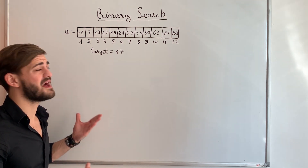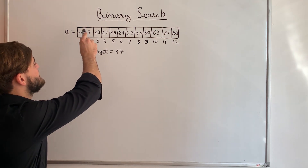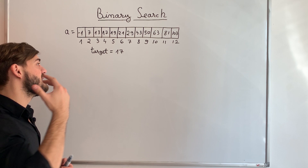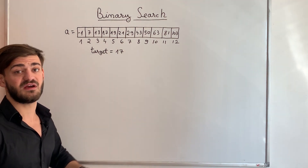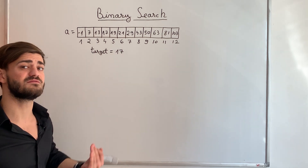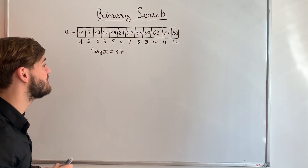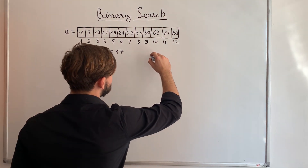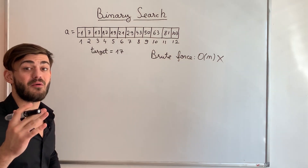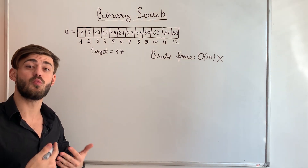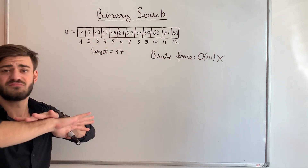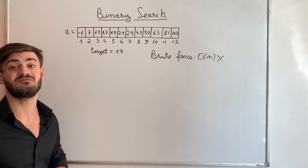Obviously we always have a brute force approach, which is to iterate through each element of our array and compare it to our target value. If at some position that element equals our target value, just return the position and exit the function. If we reach the end of the array without finding it, return minus 1. This brute force approach runs in linear time — O(n) — and works no matter how the array is arranged, even with totally random values.